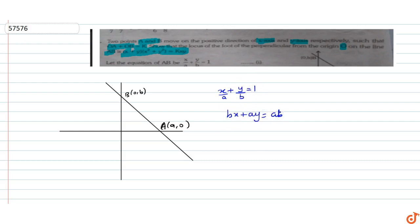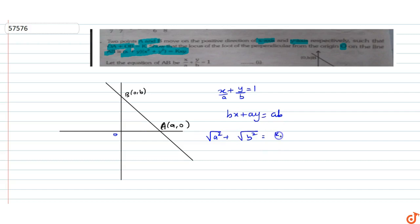We are given that the sum OA plus OB equals to K. Since OA equals the square root of a squared, which is just a, and OB equals b, we get a plus b equals K. We will call this equation number 1.